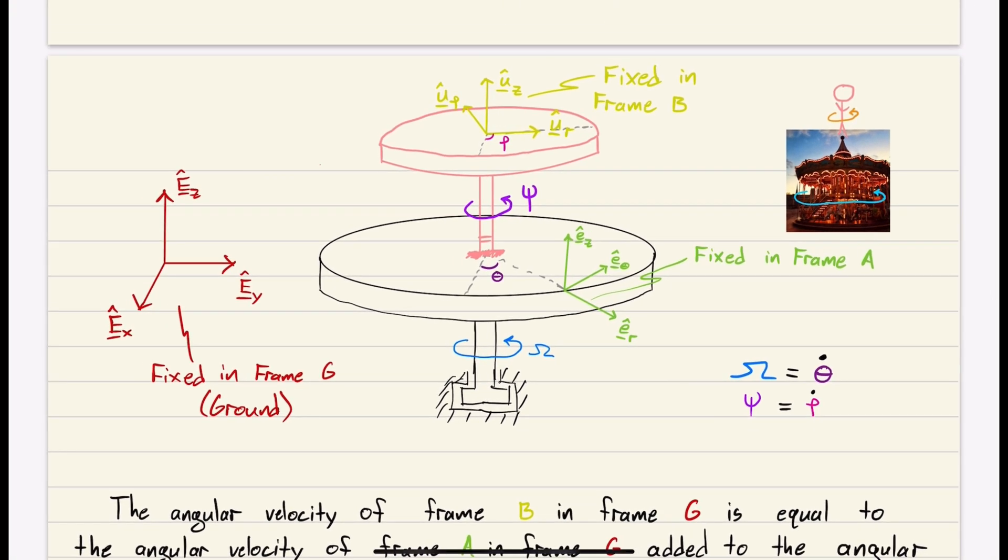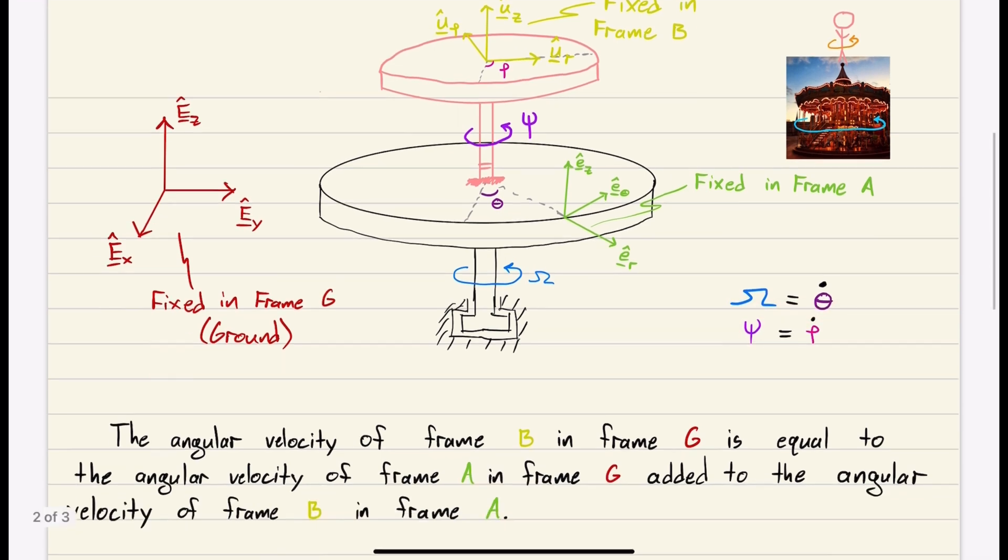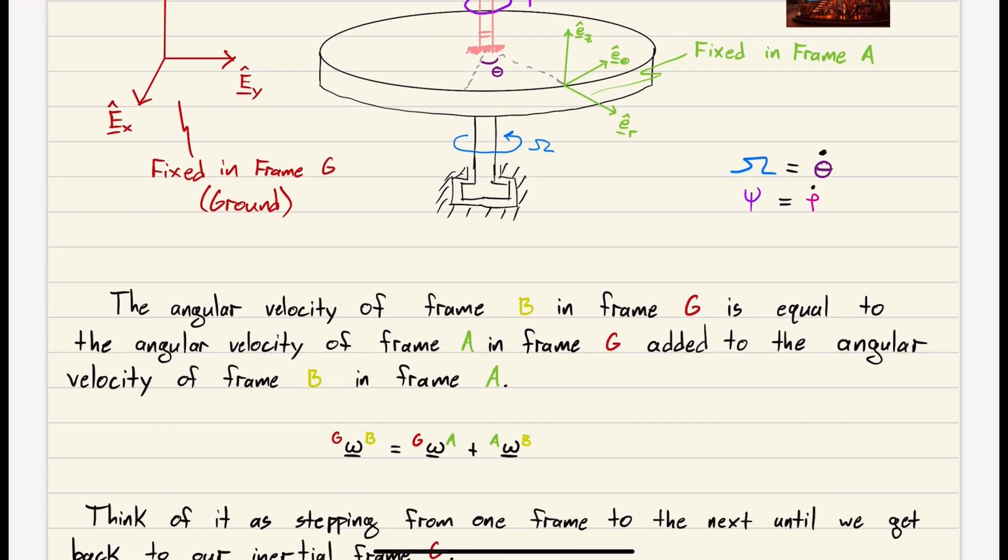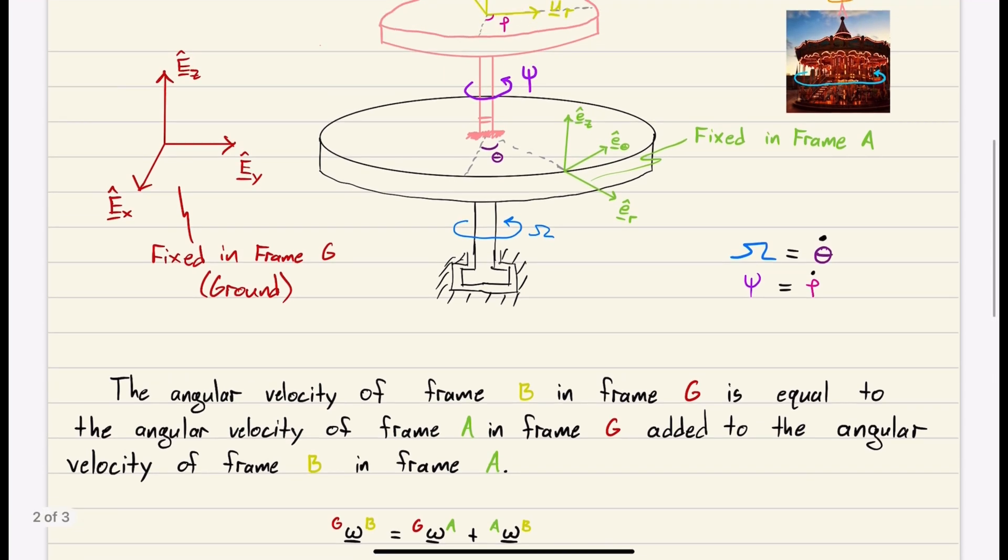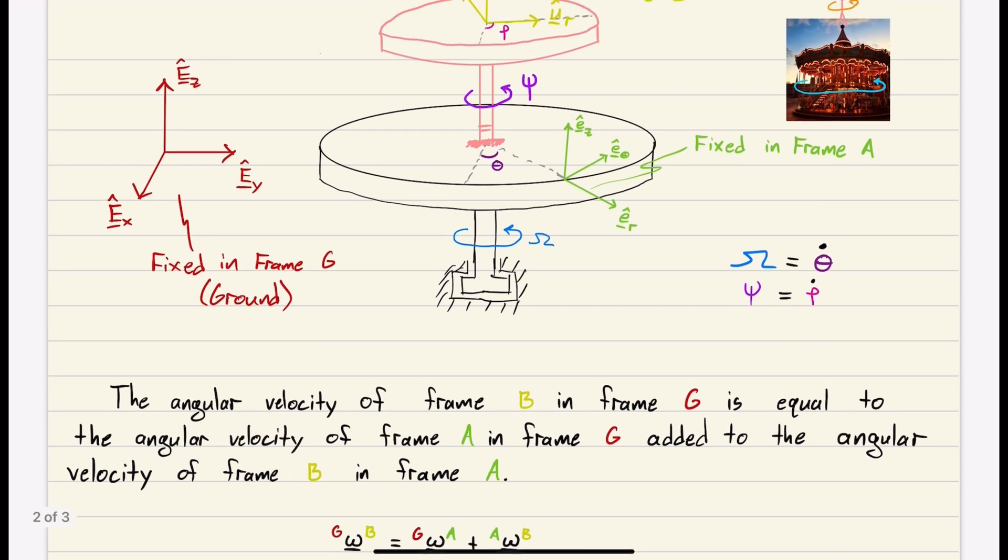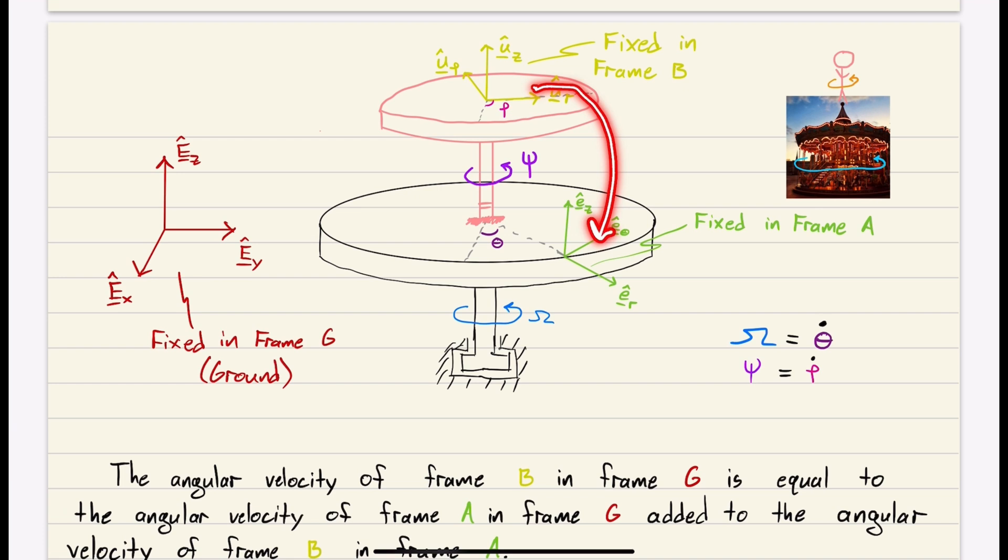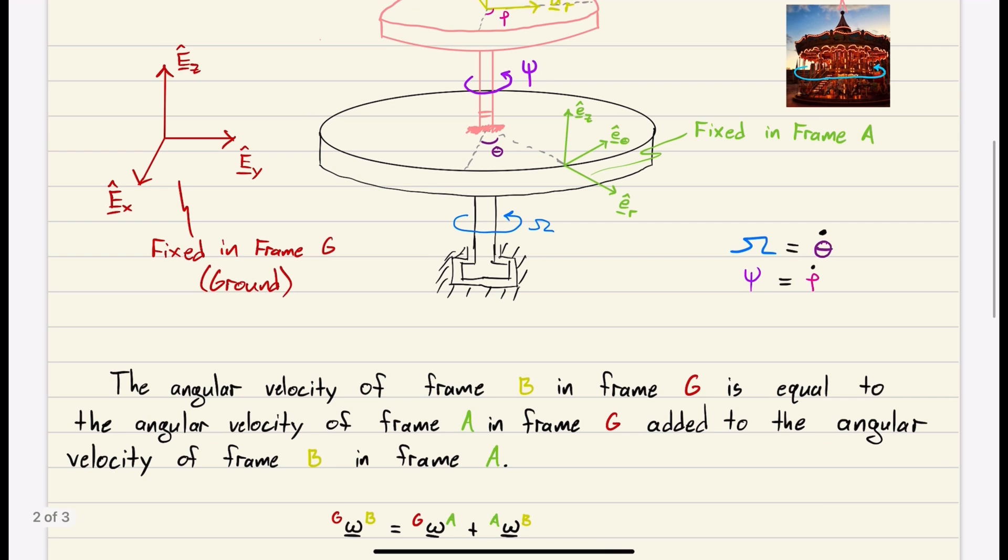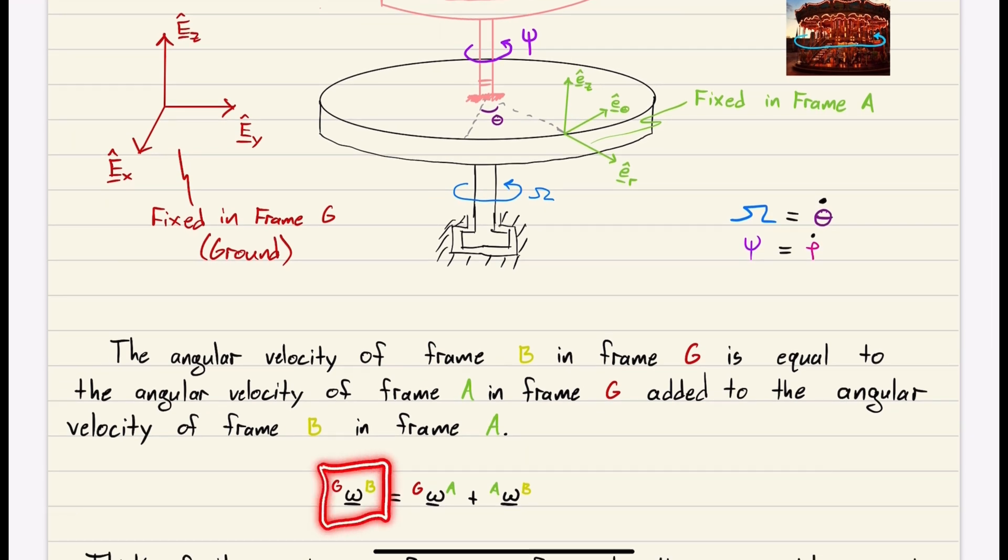The upper disk spins at a rate of phi with respect to the lower disk, making angle rho. So phi equals rho dot. The angular velocity of frame B in frame G equals the angular velocity of A in G plus the angular velocity of B in A. We can do this backstepping: the angular velocity of B in A plus the angular velocity of A in G equals the angular velocity of B in G.